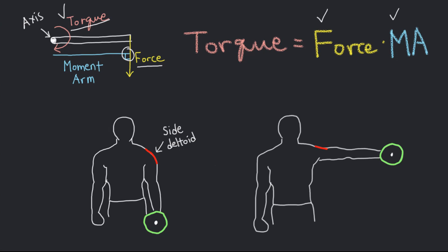Let's apply this concept to an exercise. Imagine you're performing a side lateral raise for the deltoid muscles using a dumbbell. Initially, when you're holding the dumbbell at the side of your body, the torque at your shoulder joint will be zero since the moment arm is zero and there is no tension in your deltoid muscles.